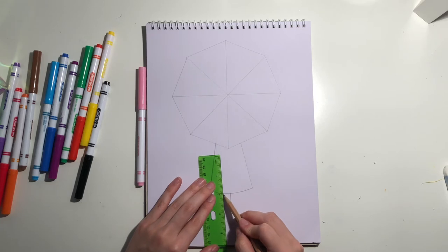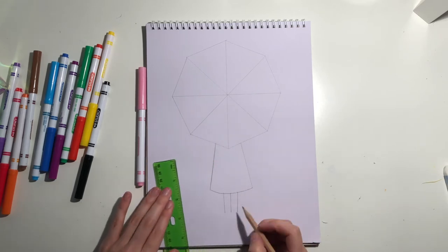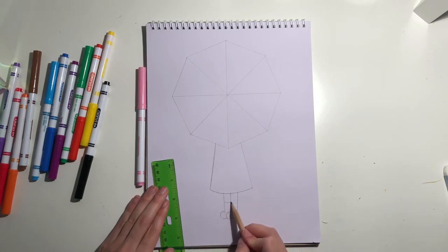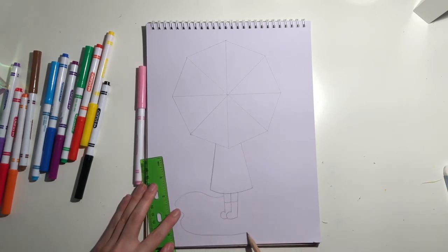Next, add two legs and some boots. Don't forget to draw a puddle around the boots.